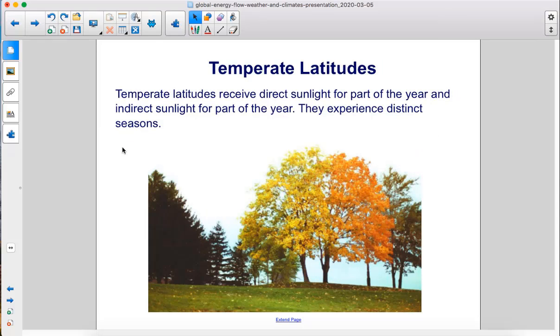Temperate latitudes receive direct sunlight for part of the year and indirect sunlight for part of the year. They experience distinct seasons.